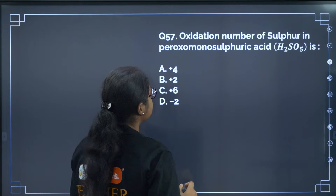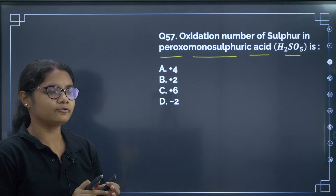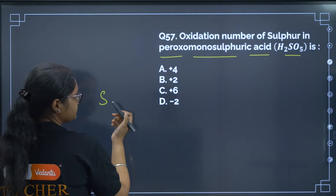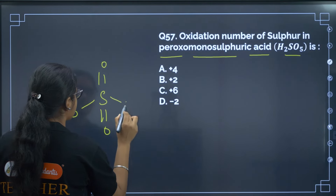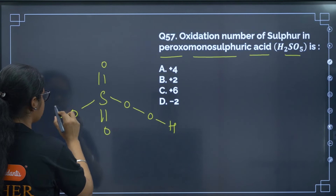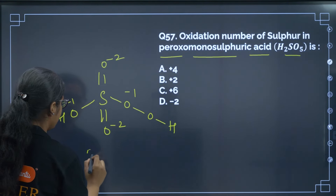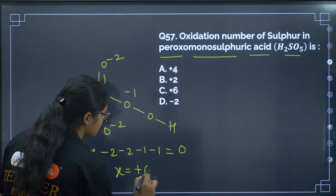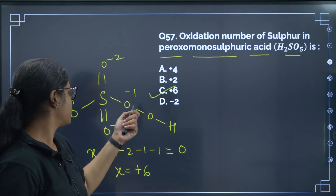Question 57: Oxidation number of sulfur in peroxomonosulfuric acid. When 'peroxo' appears, there is a peroxide bond (O−O, each oxygen = −1). The structure has two peroxide oxygens (−1 each) and two regular oxygens (−2 each). So: x + (−2) + (−2) + (−1) + (−1) = 0, giving x = +6. Correct answer is option C.